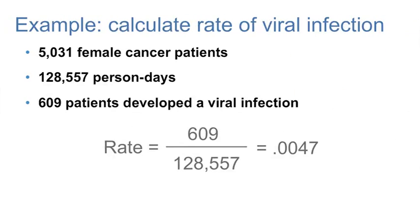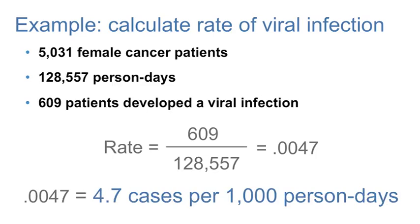Let's start with the numerator. This is 609. The denominator is the 128,557 person days. When we do the division, the rate equals 0.0047. We can then convert this to a more easily interpretable statistic to get 4.7 cases per 1,000 person days. Now, let's give you the opportunity to calculate a rate.